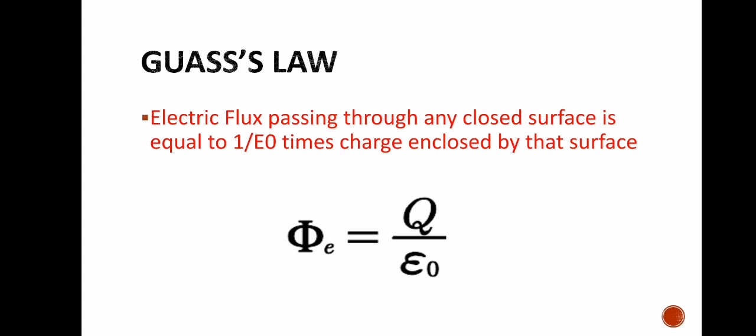Now, Gauss's law: the electric flux passing through any closed surface is equal to 1 over epsilon naught times the total charge enclosed by the surface. Phi E = Q / epsilon naught. So the electric flux for a closed surface can be calculated by dividing the charge enclosed by the surface by the permittivity of free space.